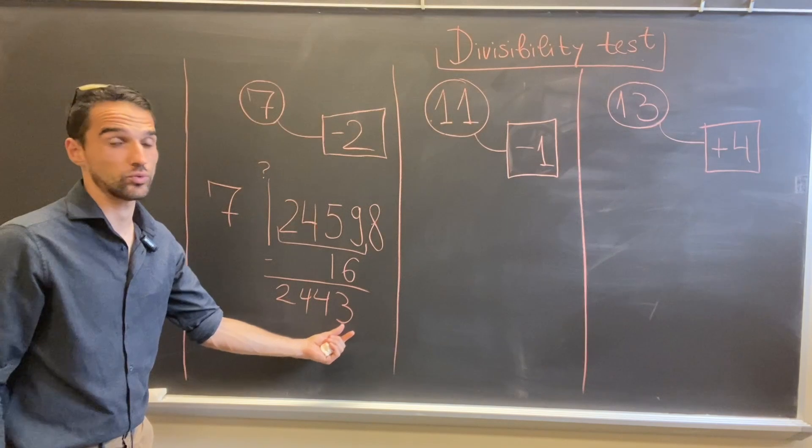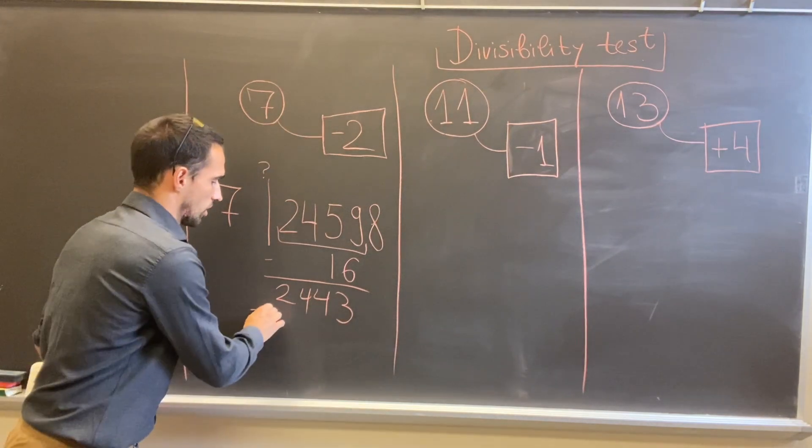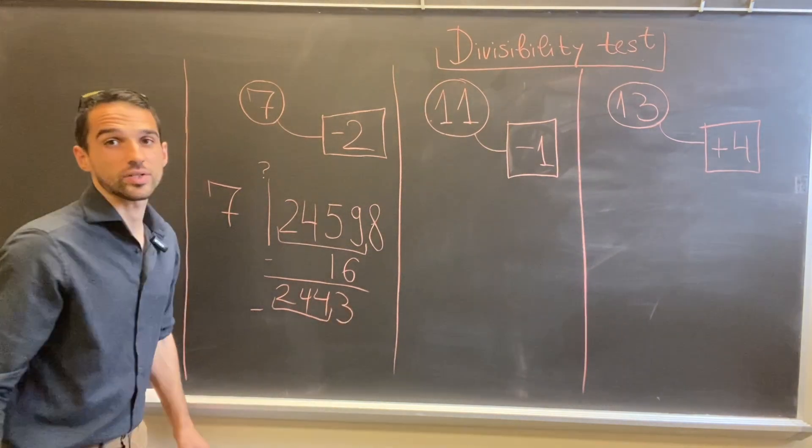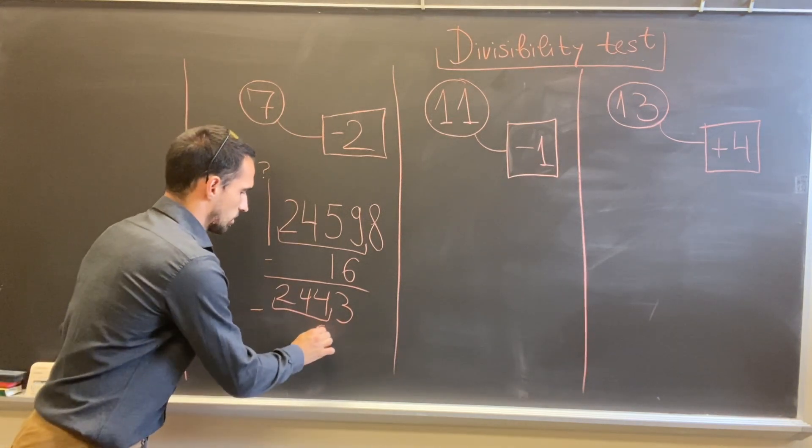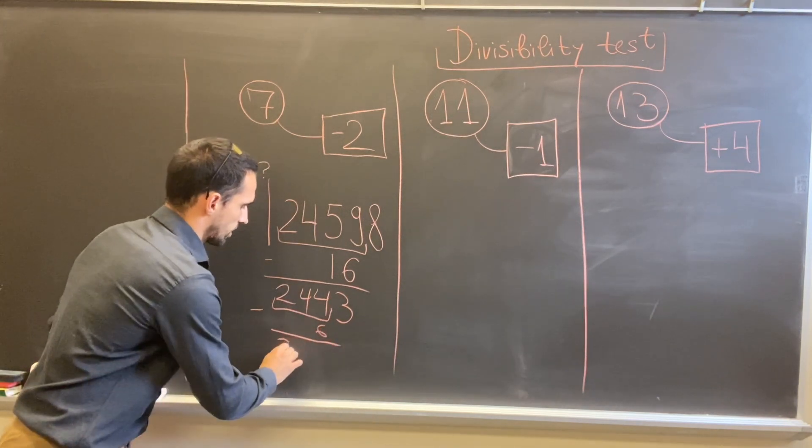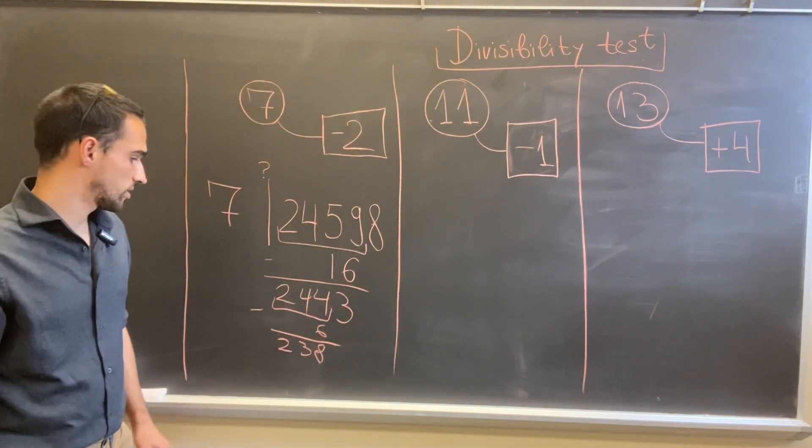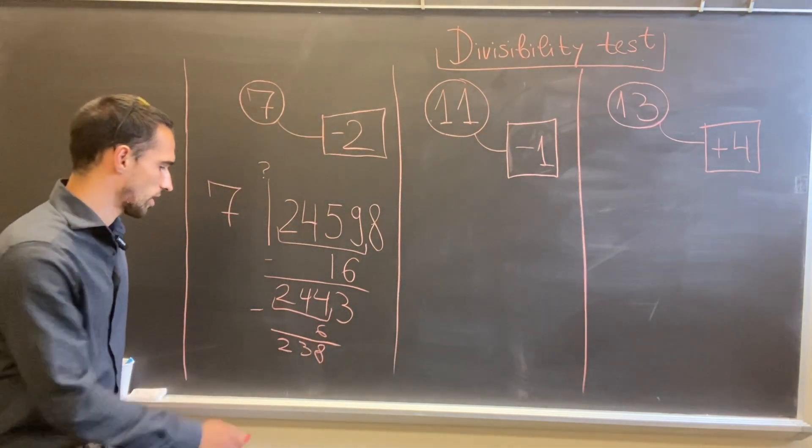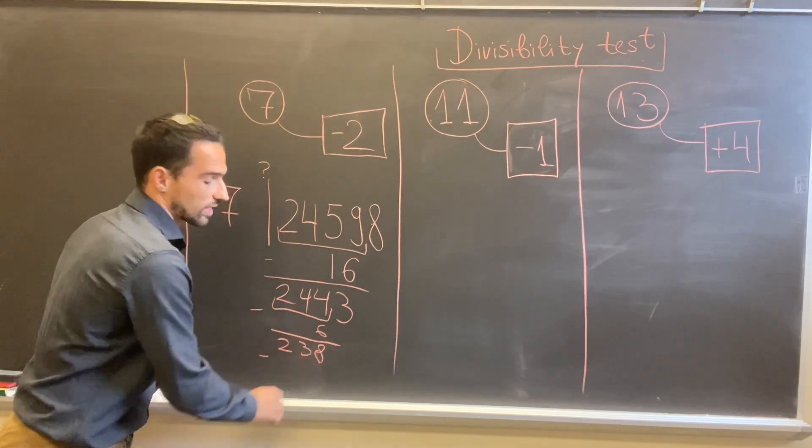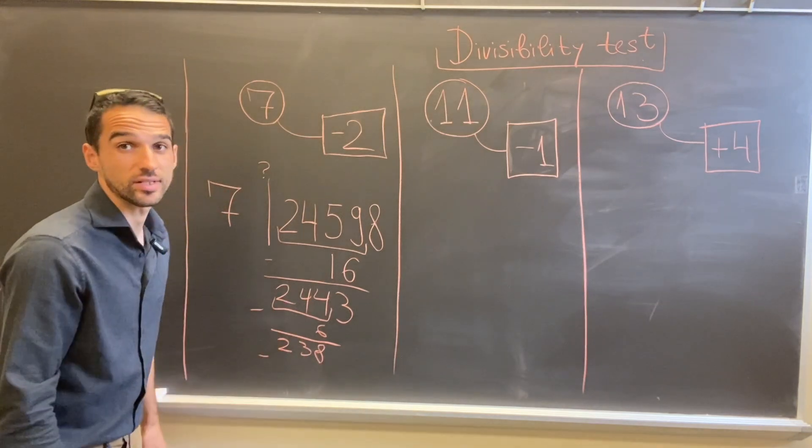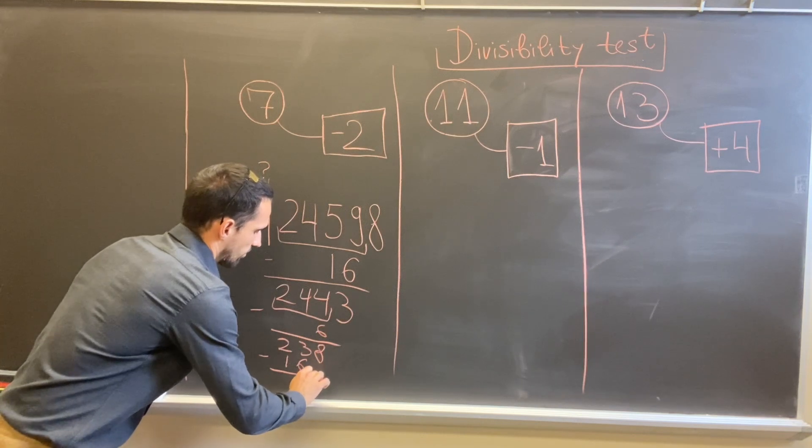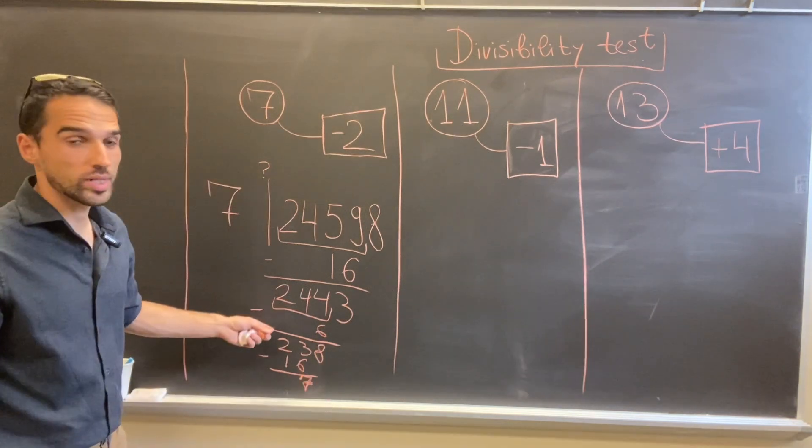Then we continue the same way. We take the same number without the last digit and subtract 2 times that last digit. So then we take 244 and subtract 6 to get 238. And one more time, if we subtract 2 times 8 from 23 we get 7.